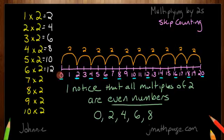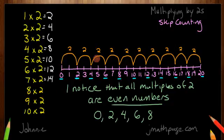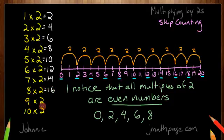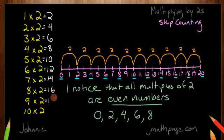Skip counting by 2, seven times: 1, 2, 3, 4, 5, 6, 7. And I find myself at 14. So 7 times 2 equals 14. Again, skip counting by 2, but this time eight times: 1, 2, 3, 4, 5, 6, 7, 8. And I find myself at 16. So 8 times 2 equals 16. Skip counting by 2, nine times: 1, 2, 3, 4, 5, 6, 7, 8, 9. And I find myself at 18. So 9 times 2 equals 18.